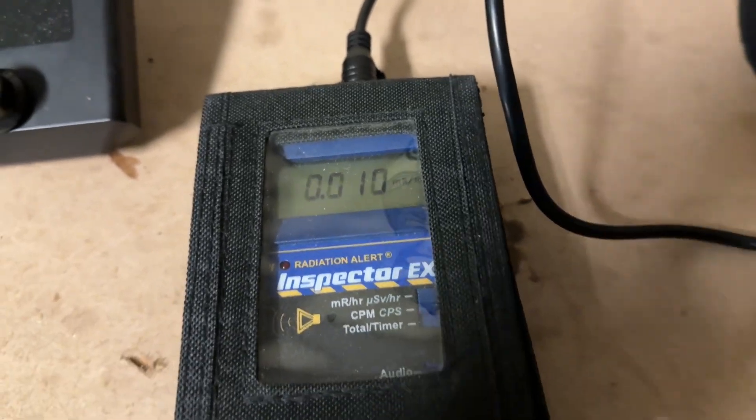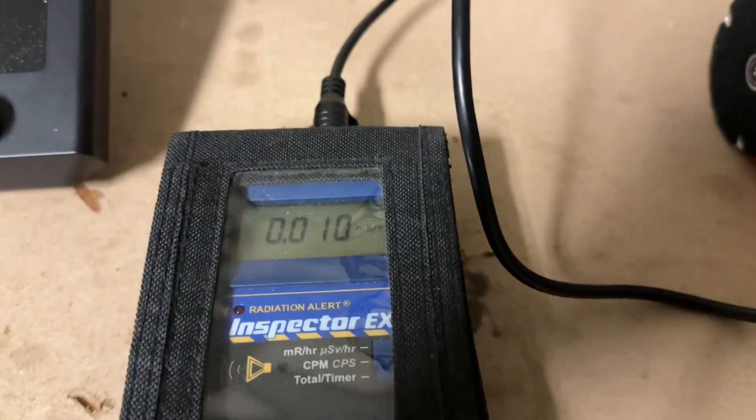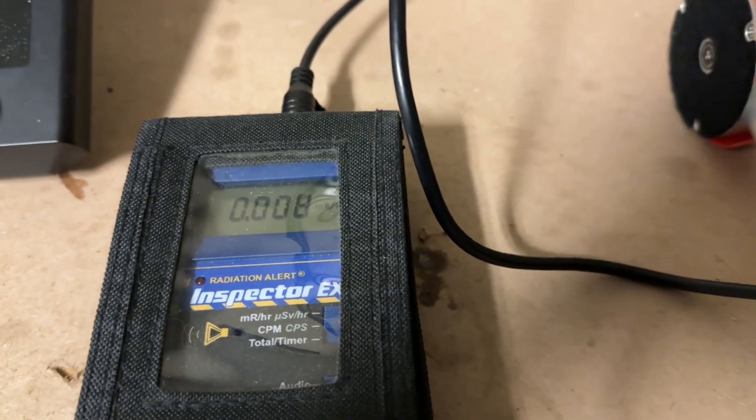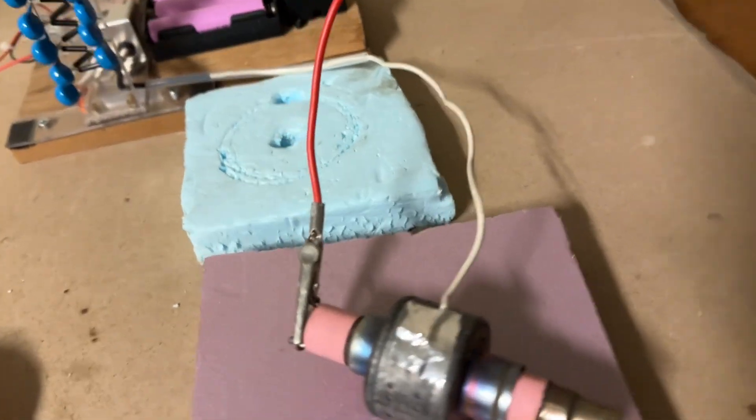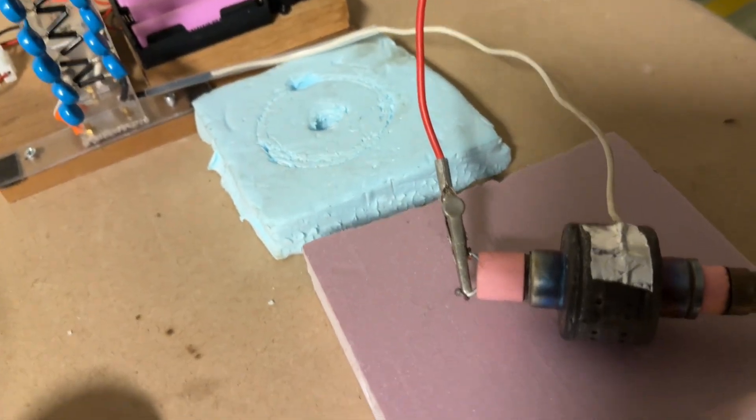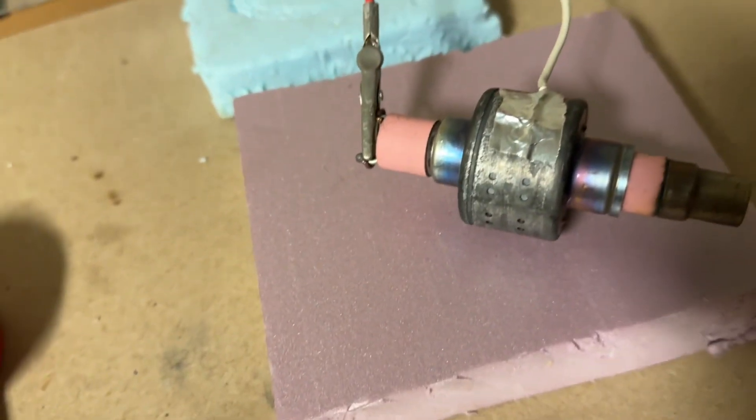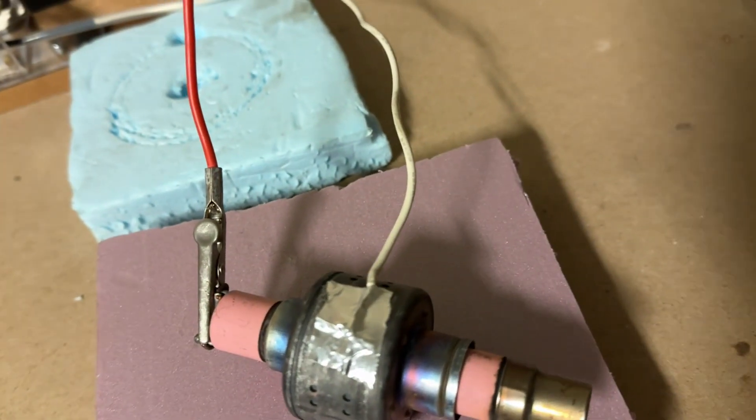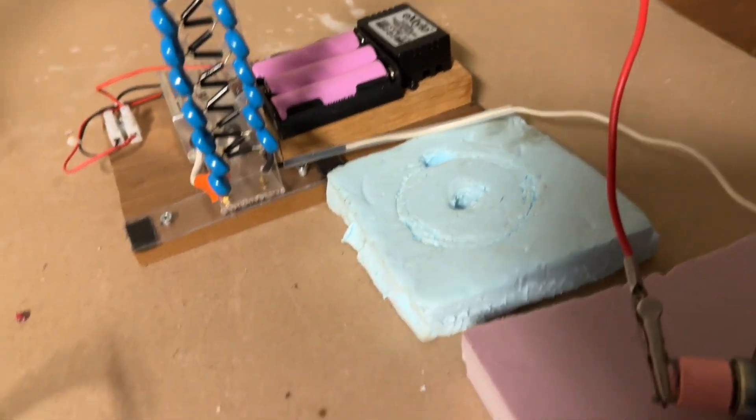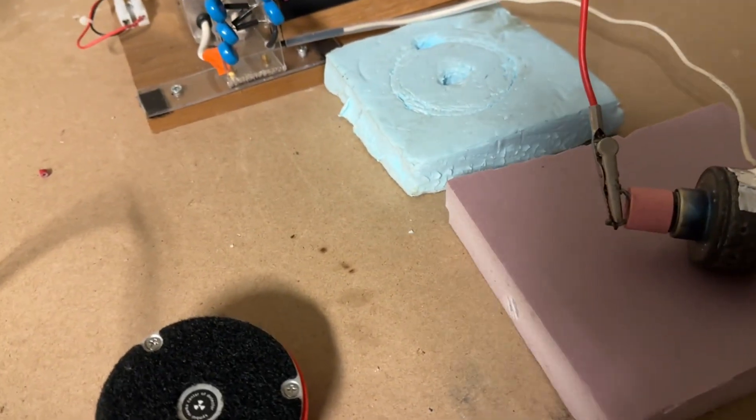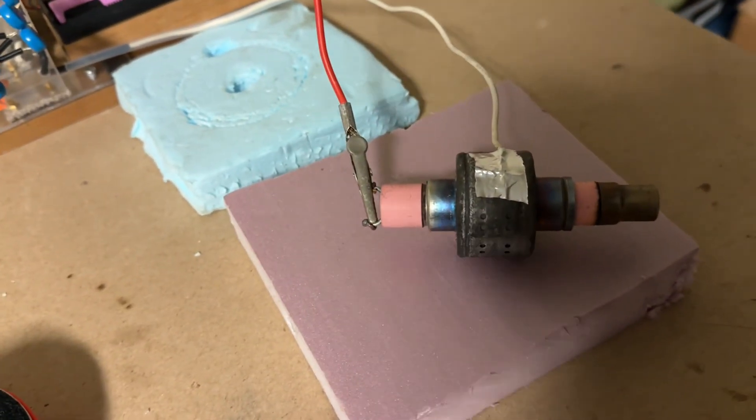All right, now we're going to switch polarity and see if it still produces that much radiation. Okay, the polarity is now switched. So the anode is getting the negative charge and the cathode is getting the positive charge from the voltage multiplier. I'm going to switch it on and we're going to measure radiation production. Here it goes.